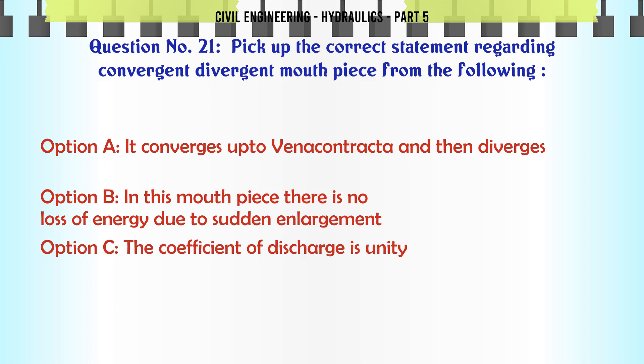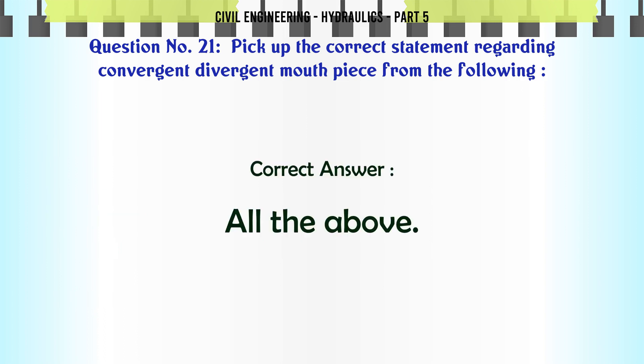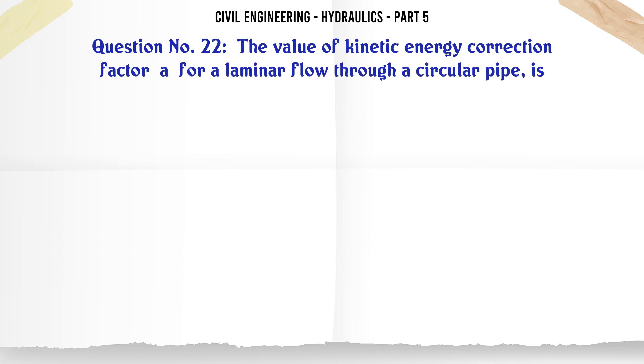Pick up the correct statement regarding convergent-divergent mouthpiece: A. it converges up to vena contracta and then diverges, B. in this mouthpiece there is no loss of energy due to sudden enlargement, C. the coefficient of discharge is unity, D. all the above. The correct answer is all the above.